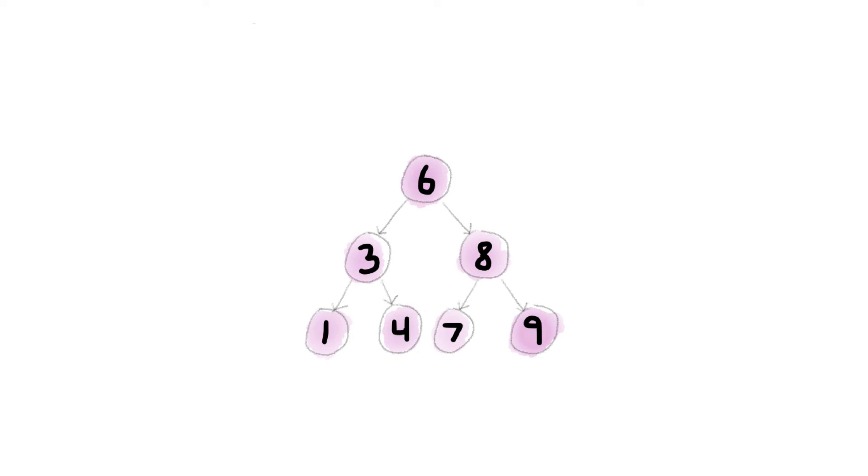You can find the minimum of the whole tree this way, too. Likewise, you can find the maximum by going right, right, right, right, right, right, until there is no greater item.